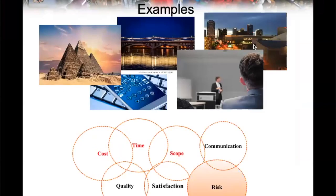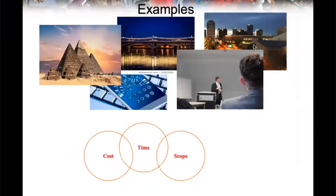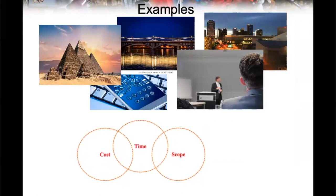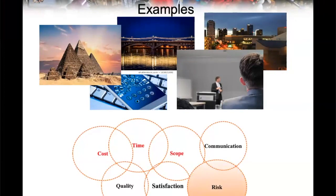A project — you know it already, we can go from there. But when we think about the triple constraints — time, scope, and cost — of course there are risks involved in all of them. We talk about PERT and the critical path. But there's also an extended version of the constraints in a project, and one of them is risk.